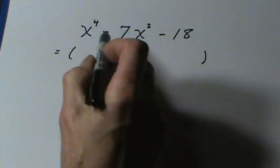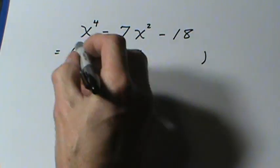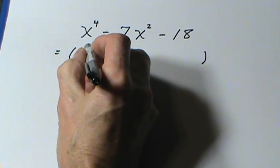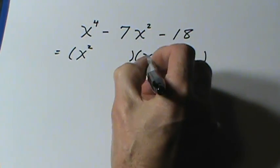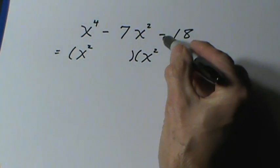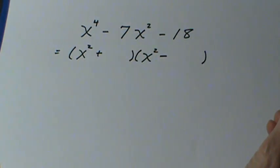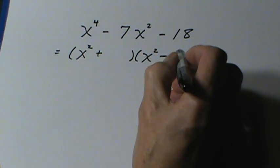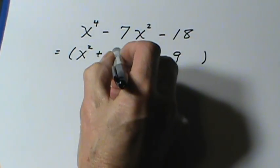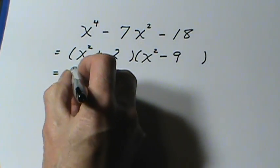Now this example has a 4 on this x, and a 2 there. So what we can do is we can do x squared times x squared, that gives us x to the 4th, the signs are different, and I need factors of 18 with a difference of 7, and that's 9 and 2, the 9 getting the negative sign in the middle. Now I'm not finished yet.